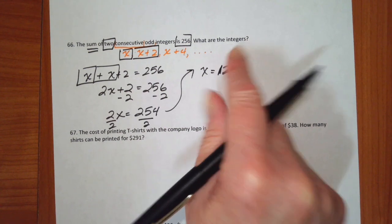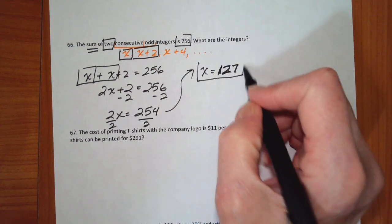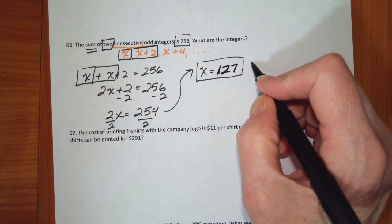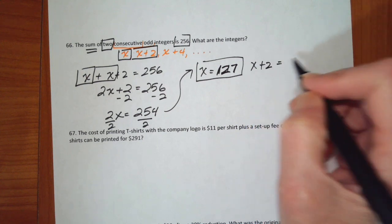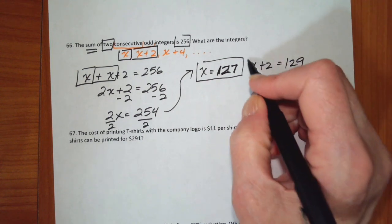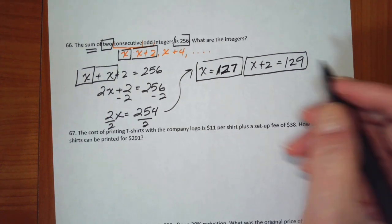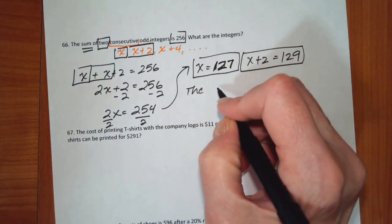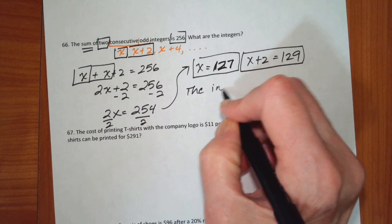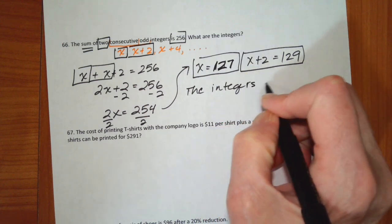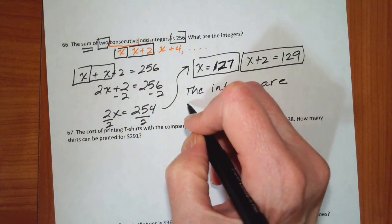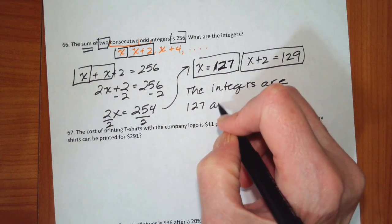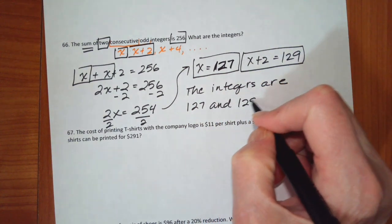But it says what are the integers? So x is 127 and x plus 2, if I add 2 to that, is 129. So the integers are 127 and 129.